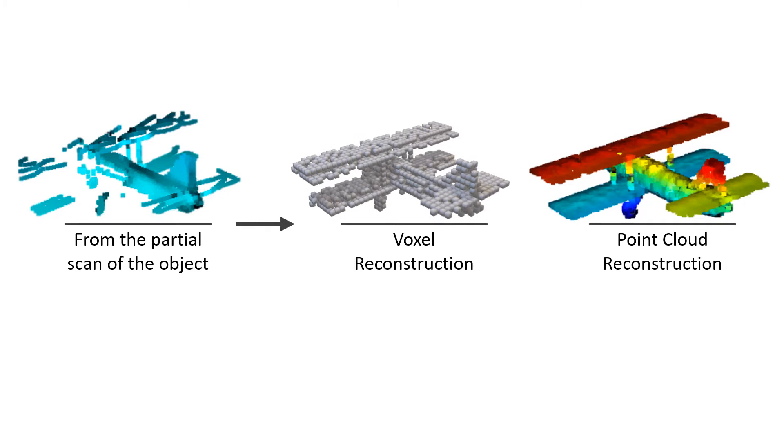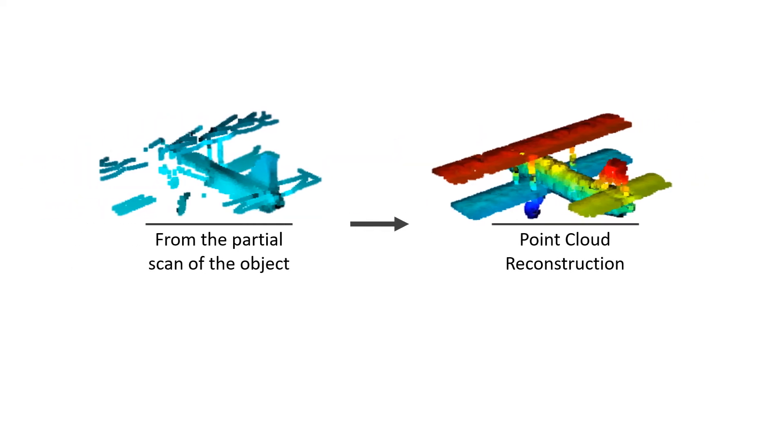There are usually two trends to solve the problem. Voxel reconstructions are the most popular because their data is organized, which allows us to directly apply convolutions. But due to their limited resolution, voxel reconstructions are not as good as point clouds. So this work focuses on point clouds.